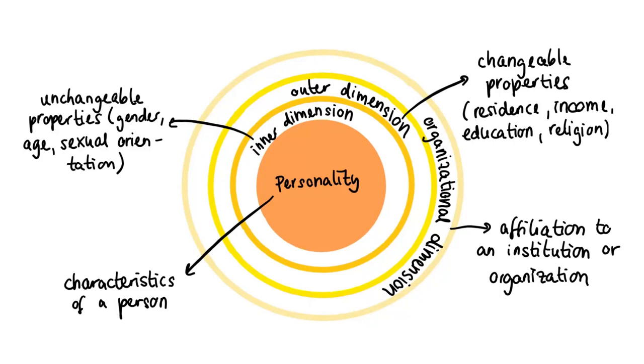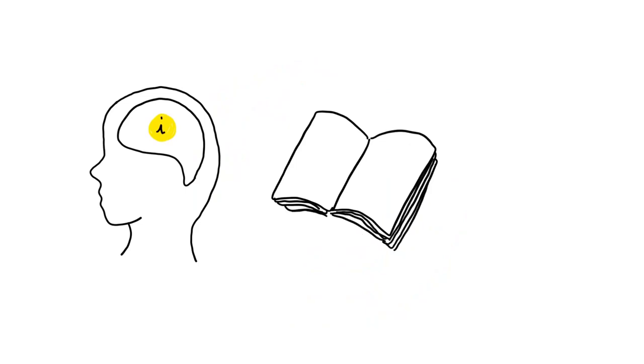This Four Layers of Diversity model illustrates how multilayered a person can be and clarifies which external circumstances can have an impact on a person's traits and identity. There are of course many more aspects in which people differ. For example, in acquiring or practicing new knowledge. That means the preferred way of learning can vary greatly from person to person.